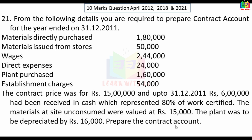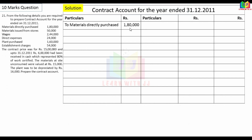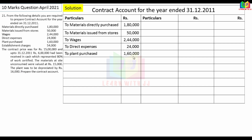Preparing the contract account — debiting items one by one: materials purchased Rs.1,80,000; materials from stores Rs.50,000; wages Rs.2,44,000; direct expenses Rs.24,000; plant purchased Rs.1,60,000; establishment charges Rs.54,000. On the credit side, plant depreciation is Rs.16,000, so the plant value at year end = Rs.1,60,000 − Rs.16,000 = Rs.1,44,000. Depreciation of Rs.16,000 is charged to the account.